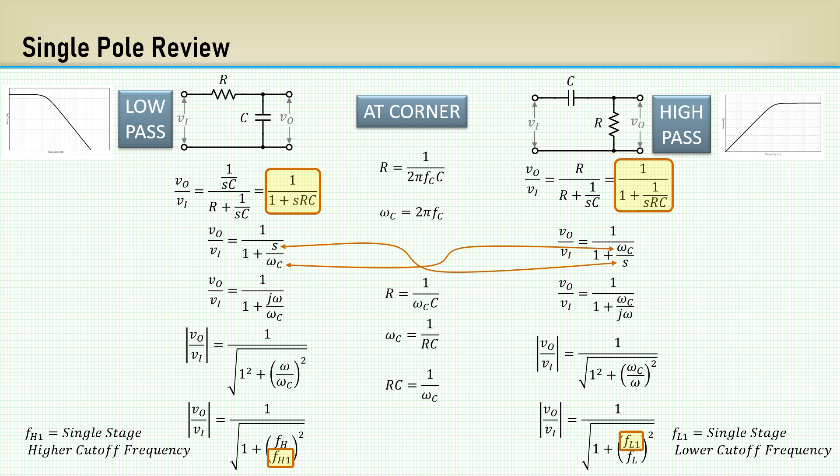Also notice the notation FH1 and FL1 are the frequencies associated with the corners of a single stage. FH and FL are the cascaded corner frequencies of which we want to solve for.